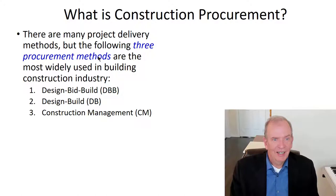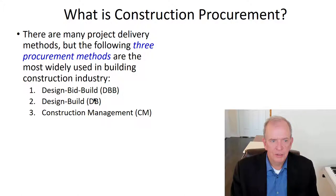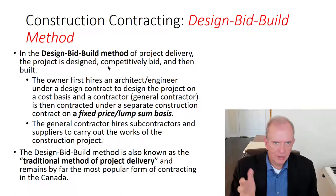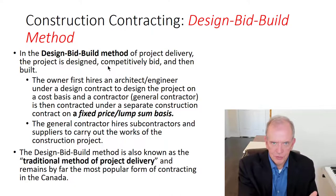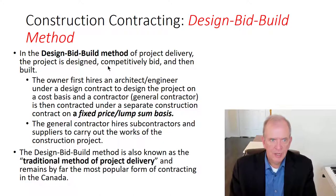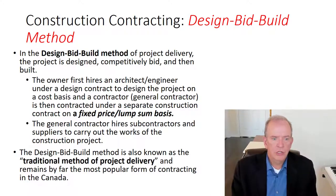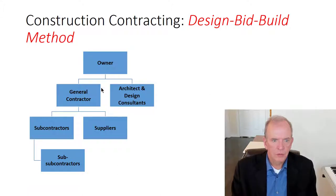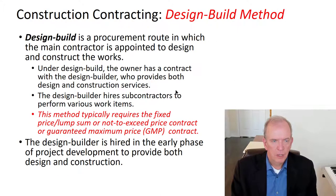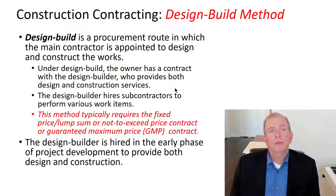There are three main procurement methods: design-bid-build, design-build, and construction management. Design-bid-build is the traditional lump sum approach — the architectural firm designs it, GCs bid on it, and then it's built and monitored by consultants acting in the client's interests. It's a very traditional method of project delivery.